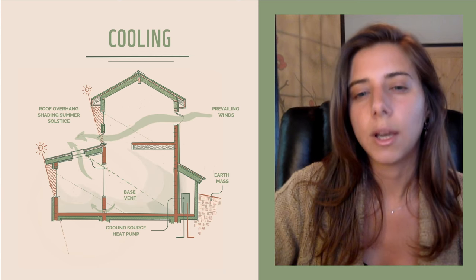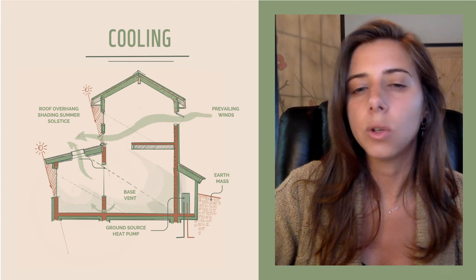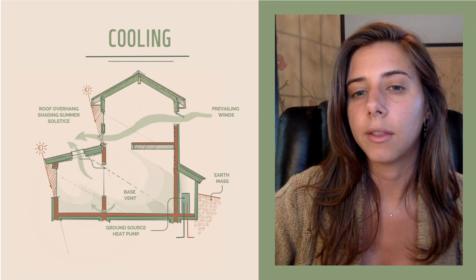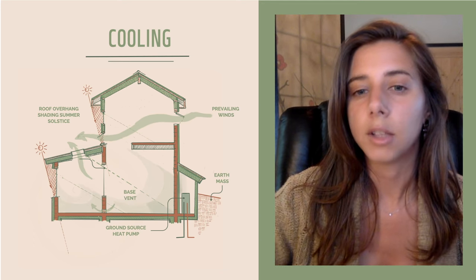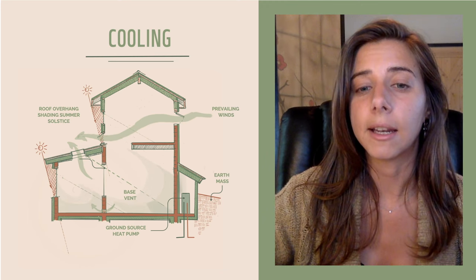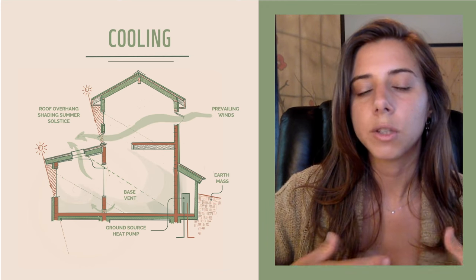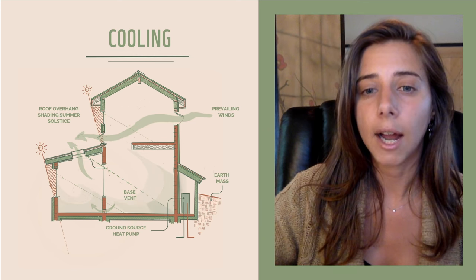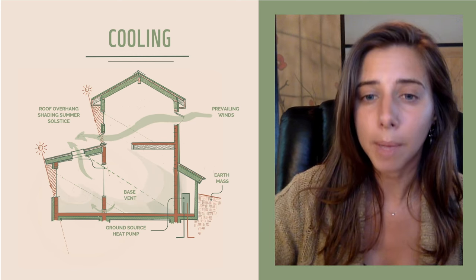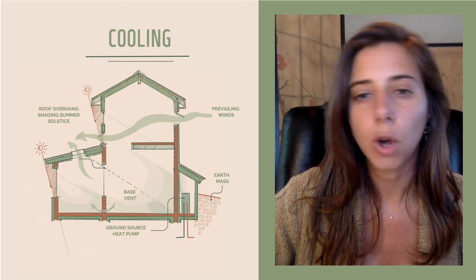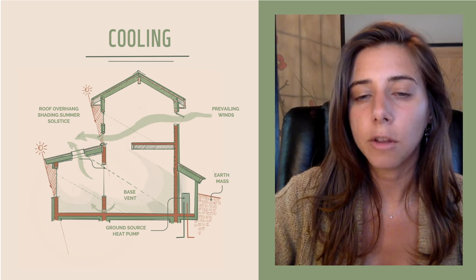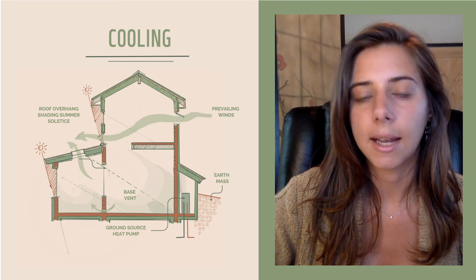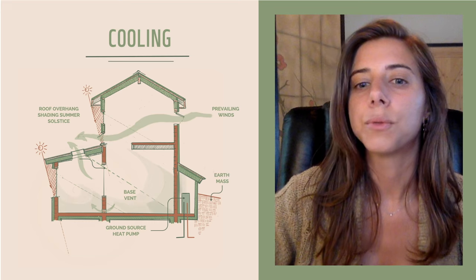Another cooling effect we have is utilizing the earth. Once we get below frost depth, the earth's surface is quite regulated in temperature. There's what's called a ground source heat pump — that has pipes going under the ground and utilizing heat pump technology. You can also go the route of using an earth mass, although this is a little bit more tricky when it comes to insulating and waterproofing those walls.